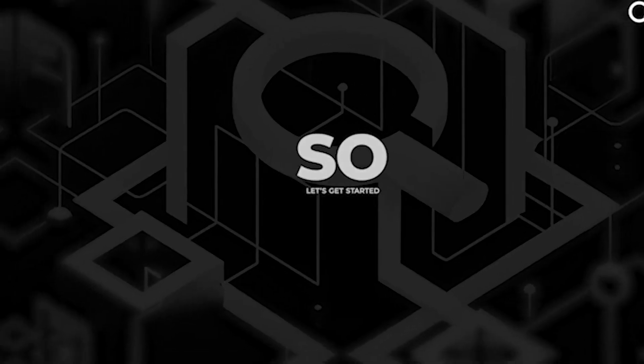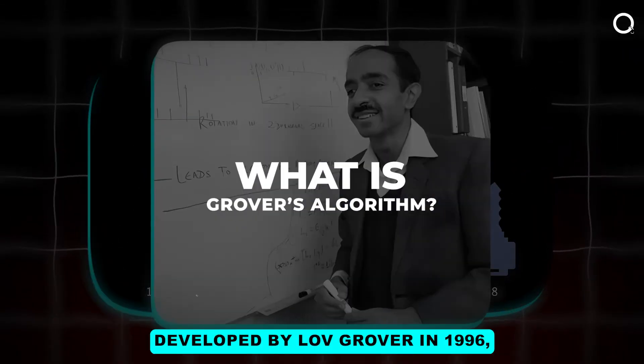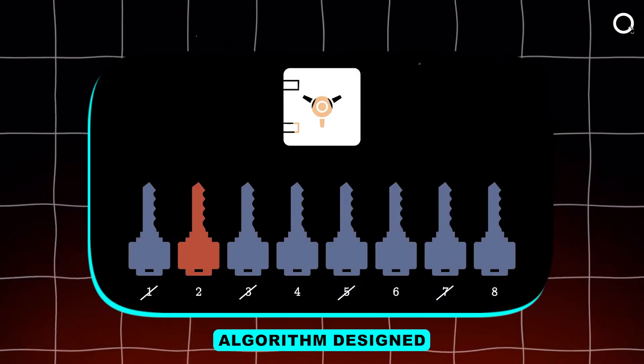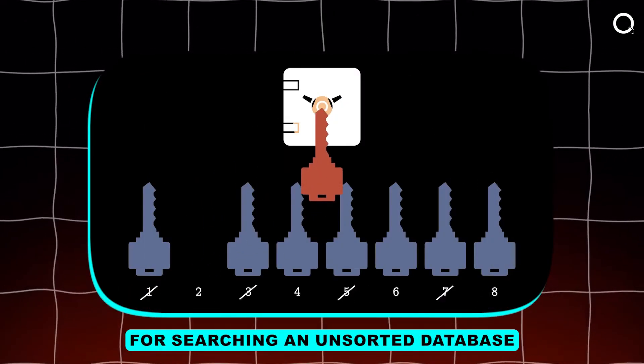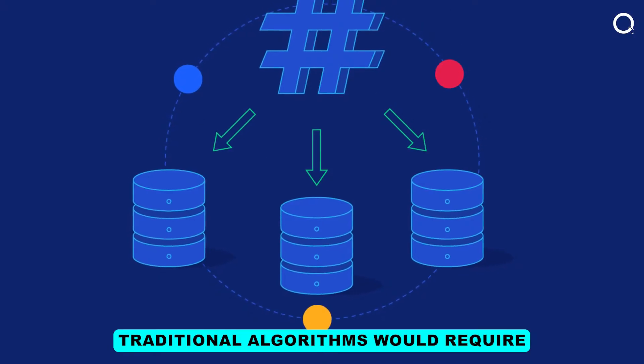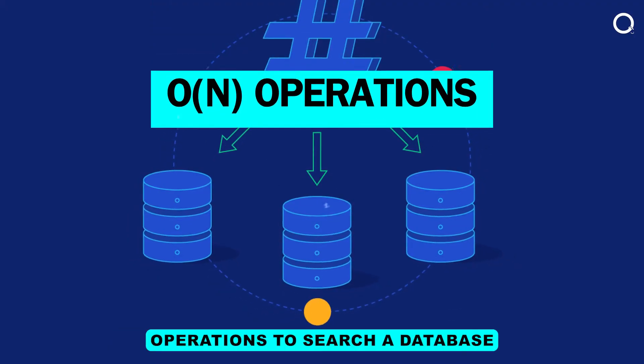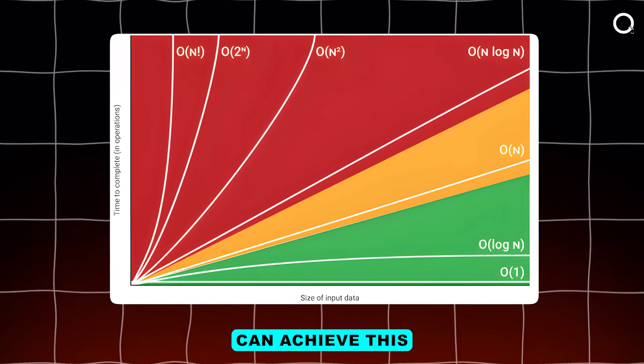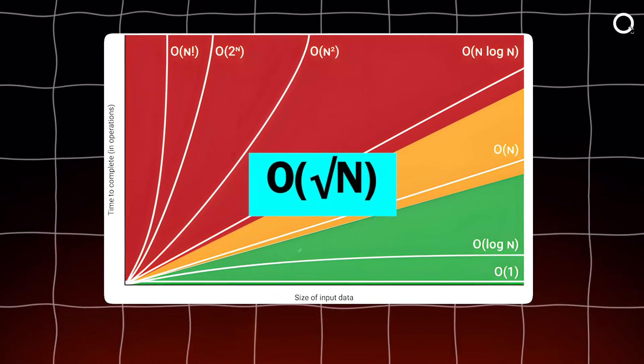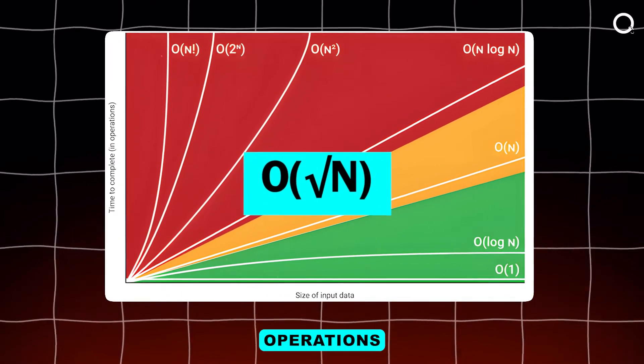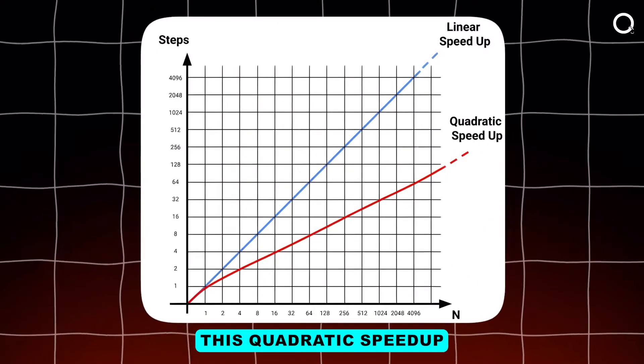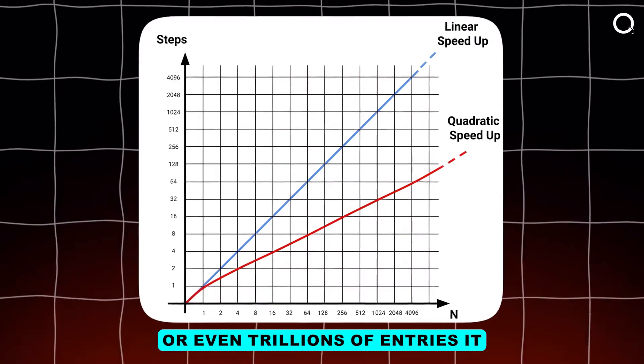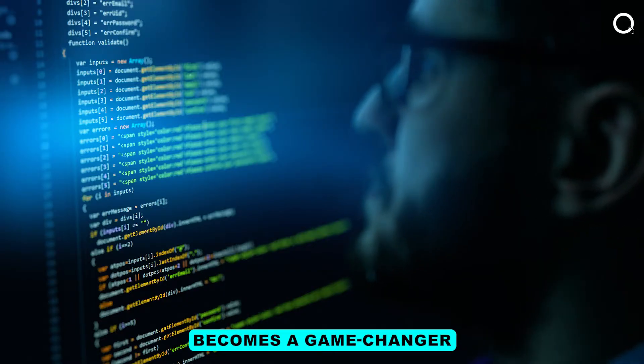Let's get started. Grover's algorithm, developed by Lov Grover in 1996, is a quantum algorithm designed for searching an unsorted database. Traditional algorithms would require O(N) operations to search a database with N entries. Grover's algorithm, however, can achieve this with just O(sqrt(N)) operations. This quadratic speedup might sound modest, but when dealing with large data sets—think billions or even trillions of entries—it becomes a game changer.